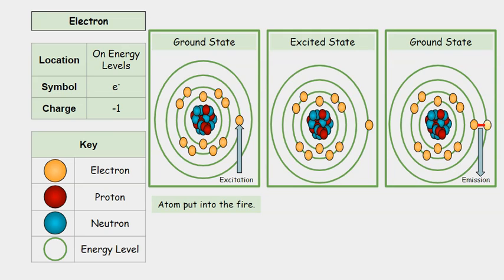In that example, we saw a metal atom placed into a fire. At the beginning, before being placed into the fire, the atom was in the ground state. But what ends up happening is, once the atom is placed into the fire, then we see the excited state.